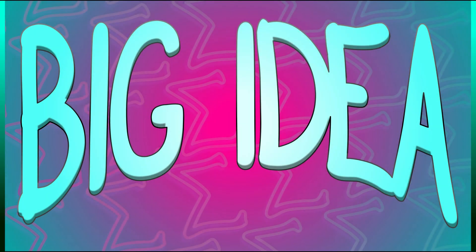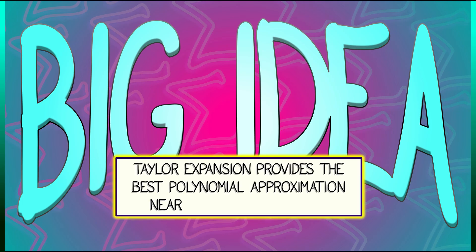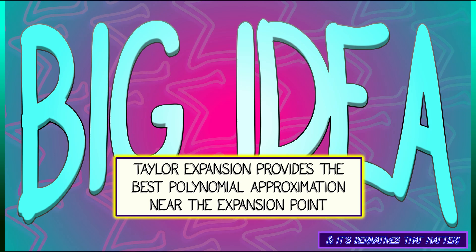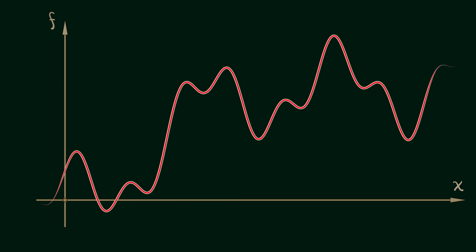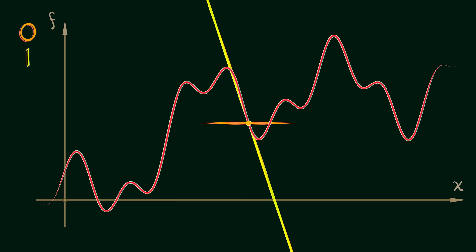The big idea that we're going to keep coming back to over and over is that Taylor expansion provides the best polynomial approximation to your function near the expansion point. If we have a function and we consider the first couple of terms of the Taylor series, we've got the zeroth order term and the first order term — together that gives you a straight line.